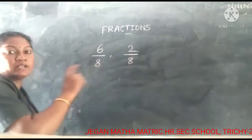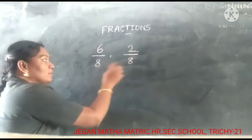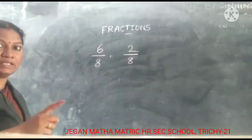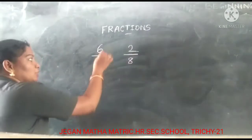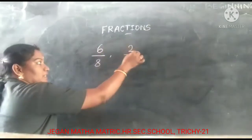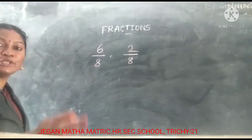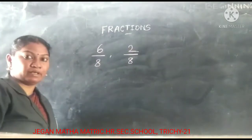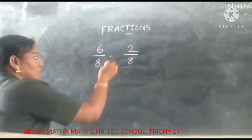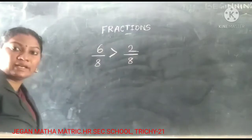Here we have 6 by 8 and 2 by 8. Both denominators are the same: 8. So check the numerator — here 6 and here 2. Comparing 6 and 2, 6 is the greater number, so 6 by 8 is the greater fraction.